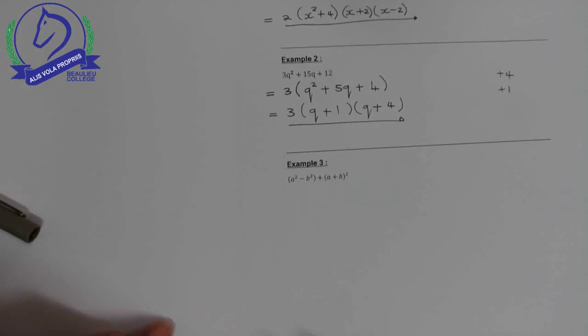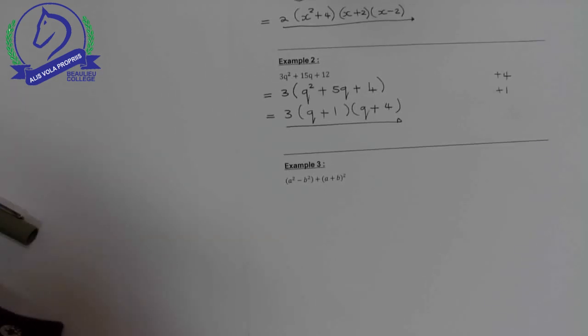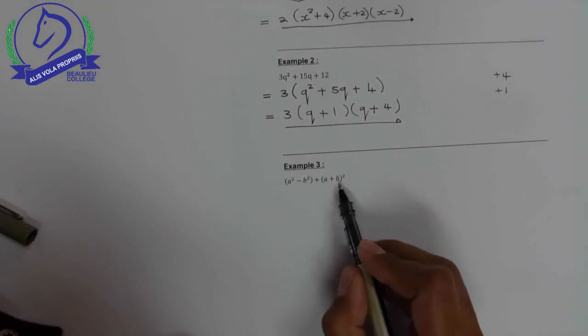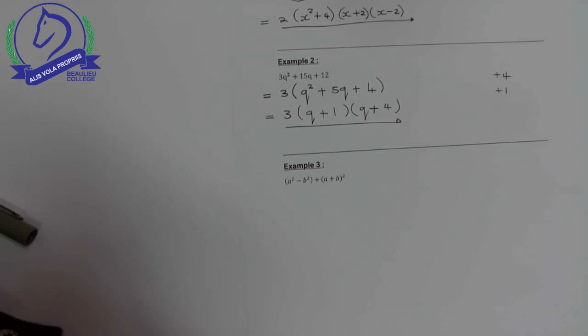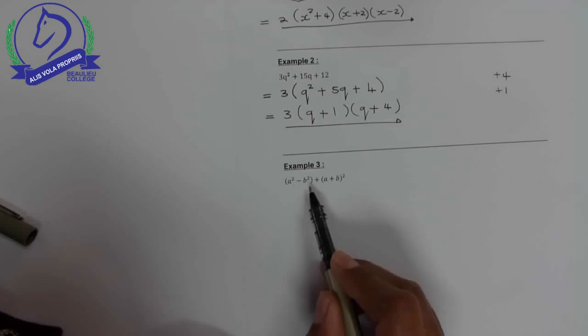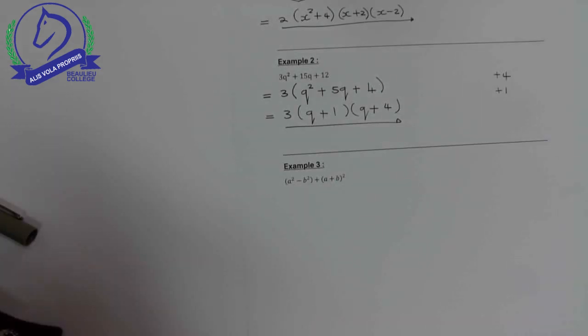Moving on to example 3. Here's an interesting question. You have two terms. That's the first thing you need to identify: the number of terms in an expression. Now at the moment, remember the golden rule to factorize is always look for a common factor. At the moment there isn't a common factor, so you've got to look and see what can I do to this expression.